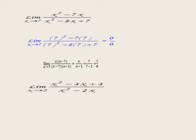Another example: limit as x approaches 2 of (x² minus 4x plus 4) over (x² minus 2x). By substitution the result is 0 over 0. Factorize numerator: x² minus 4x plus 4 equals (x minus 2)². Factorize denominator: take x as highest common factor, giving x(x minus 2). Cancel (x minus 2) with (x minus 2). The remainder is (x minus 2) over x. Substituting x equals 2: (2 minus 2) over 2 equals 0.